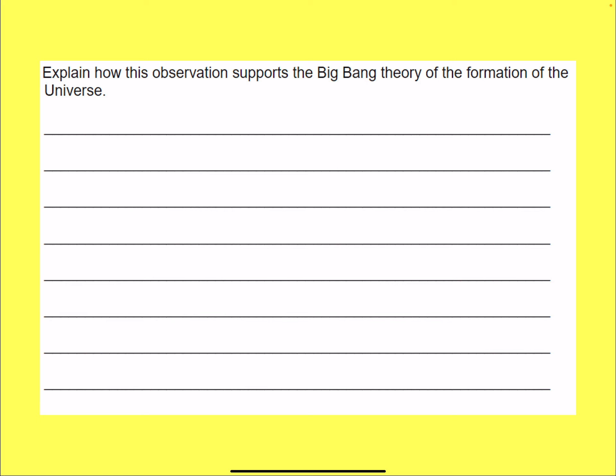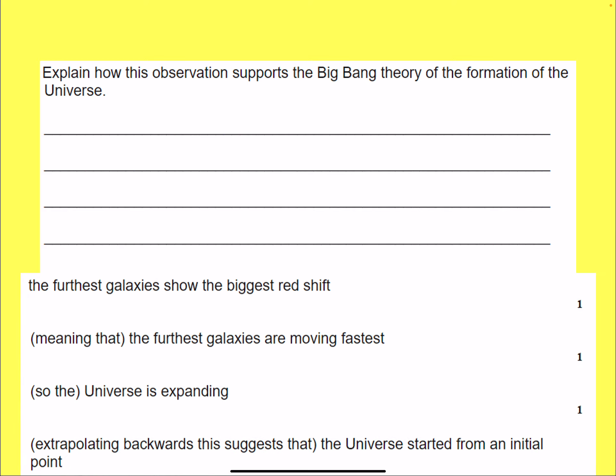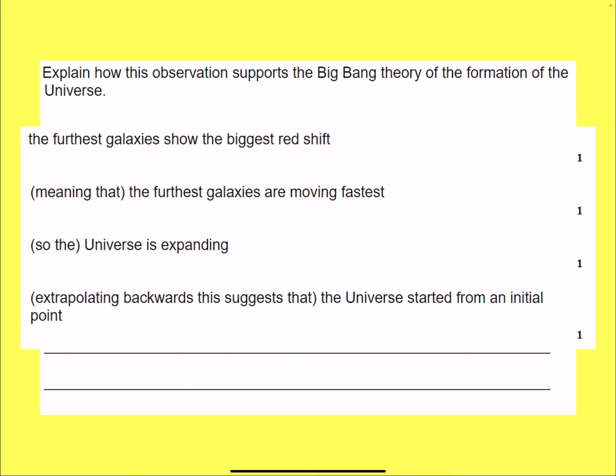Now, this one is worth quite a few marks, possibly between four and six marks. Explain how this observation supports the Big Bang Theory. Okay, so pause the video and think about everything we've discussed in this lesson. Okay, let's have a look at the answers. There you go, four marks. So the furthest galaxy shows the biggest red shift, meaning the furthest galaxies are moving fastest, which means the universe is expanding and the universe started from an initial point. There's your four marks.